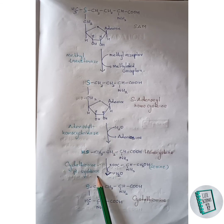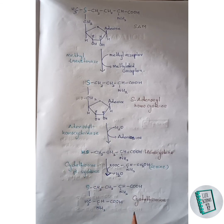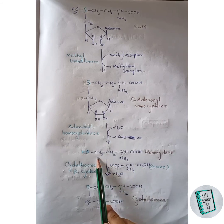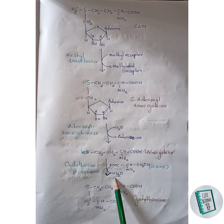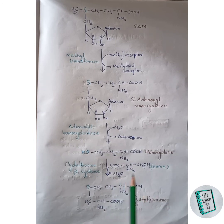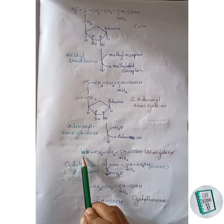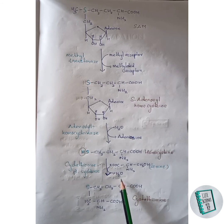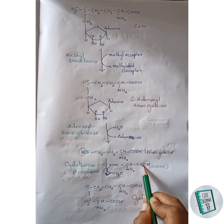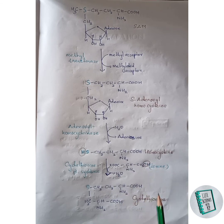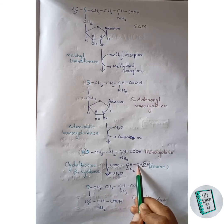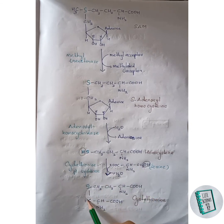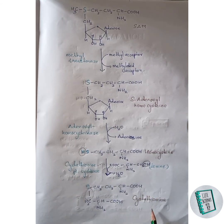Homocysteine then in the presence of cystathionine beta synthase forms cystathionine. Serine comes and joins with homocysteine with the release of a water molecule. One hydrogen of the water molecule is removed from the SH group and the OH group is removed from the OH of serine. The remaining CH2 then joins with the sulfur by a single bond, and thus cystathionine is formed.